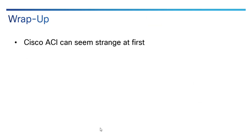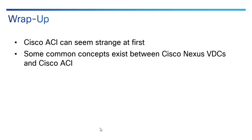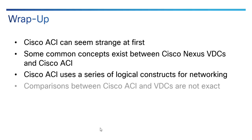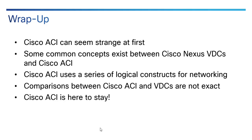To summarize: Cisco ACI can seem strange and unfamiliar at first, but some common concepts exist between Cisco Nexus 7000 VDCs and Cisco ACI — like tenants, VRFs, and bridge domains — that can help you wrap your head around it. Comparisons between the two technologies are not exact; this is more of an analogy to aid understanding. I've been working with Cisco ACI since it came out, and the question used to be whether it's a fad — it's not. It's widely installed across thousands of customers and something people work with every day. Thank you for listening.